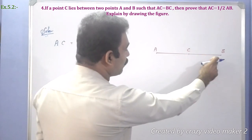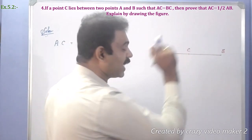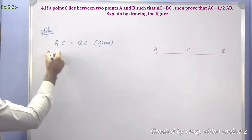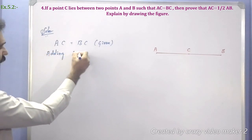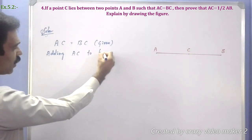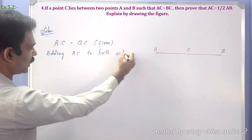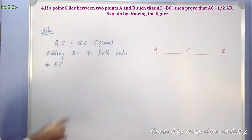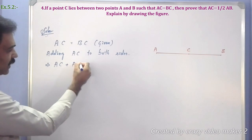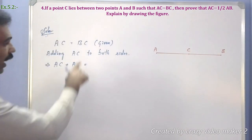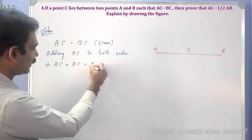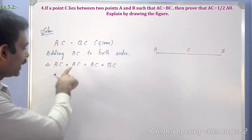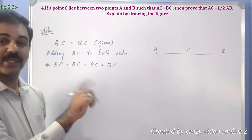AC plus BC can be written as AB. Now, adding AC to both sides. Adding AC to both sides: on the left side, AC plus AC gives 2AC. On the right side, BC is already there, and adding AC gives AC plus BC. Equals are added to equals, then the wholes are equal.